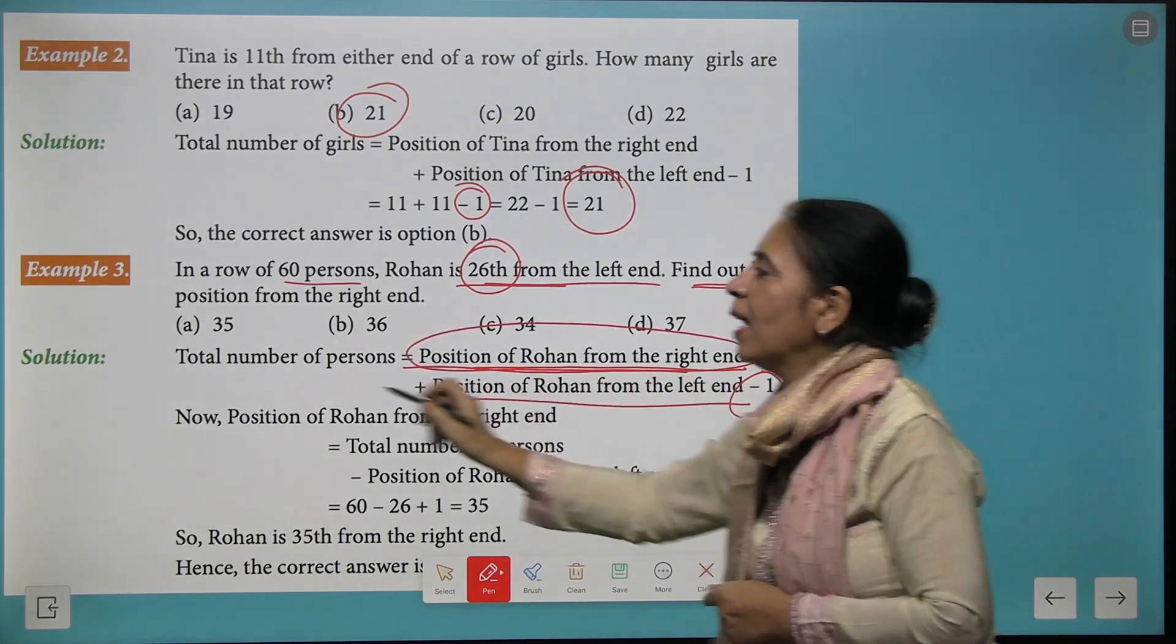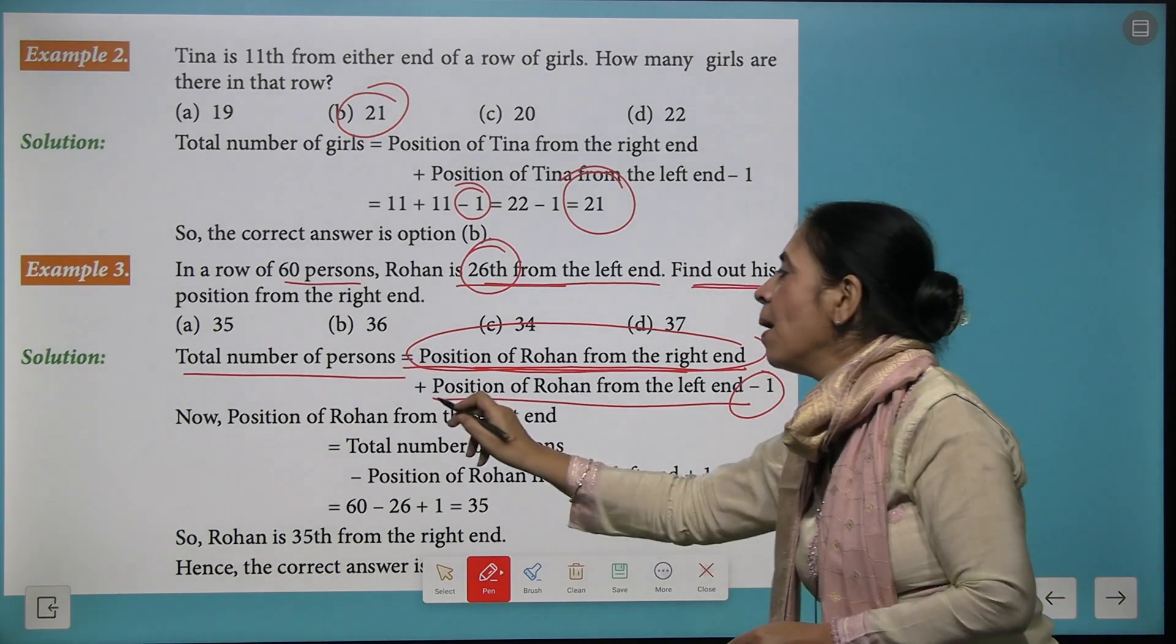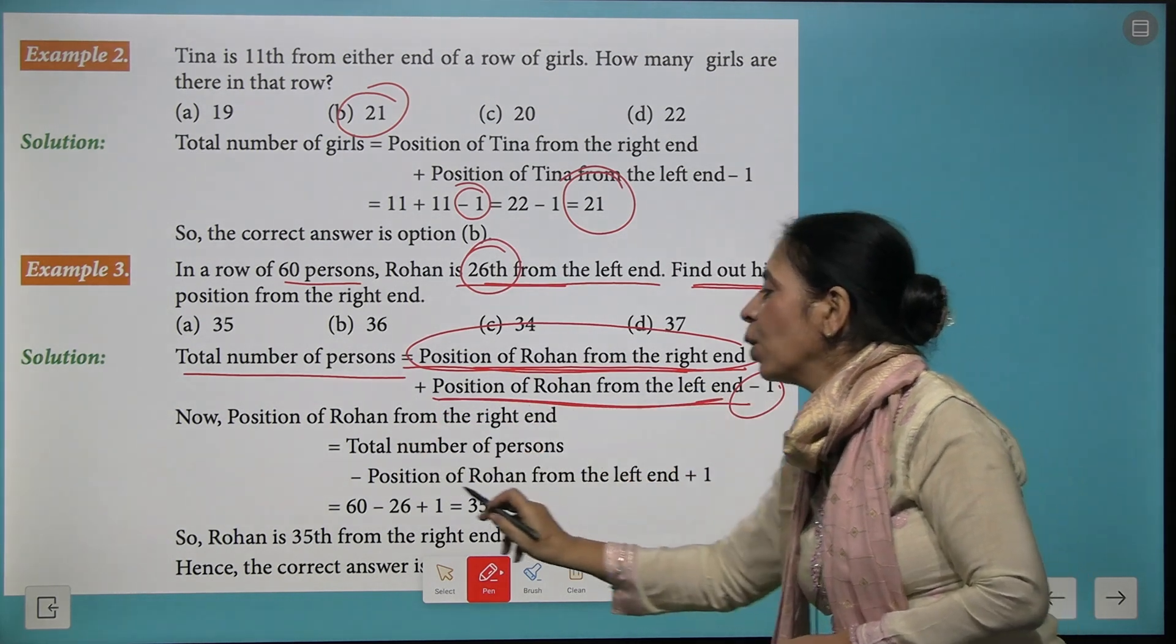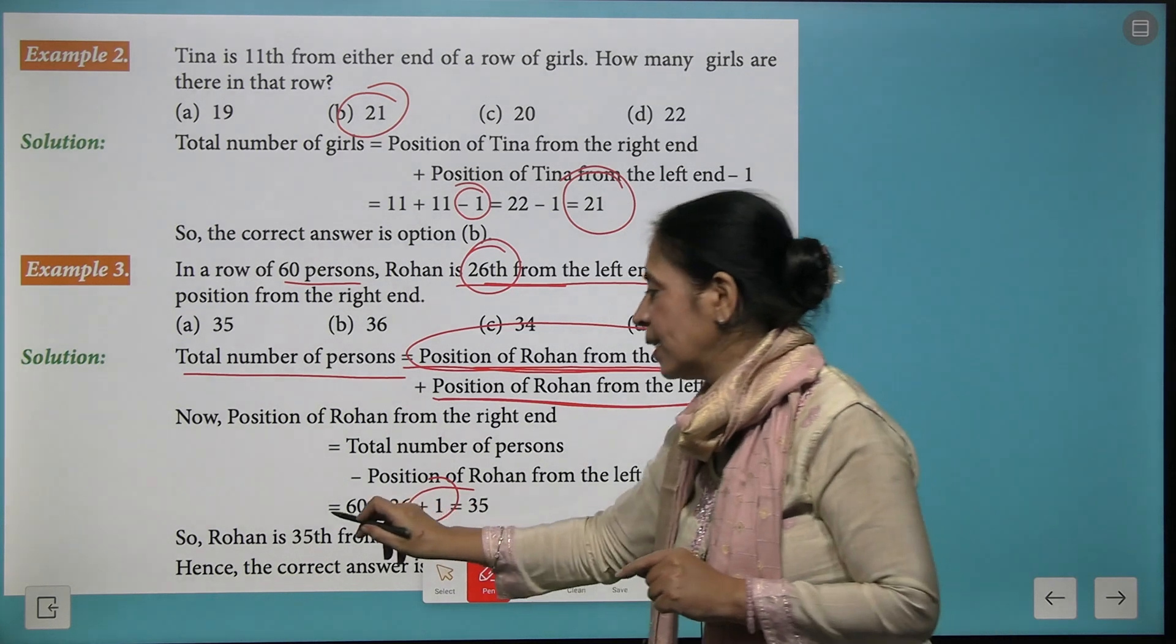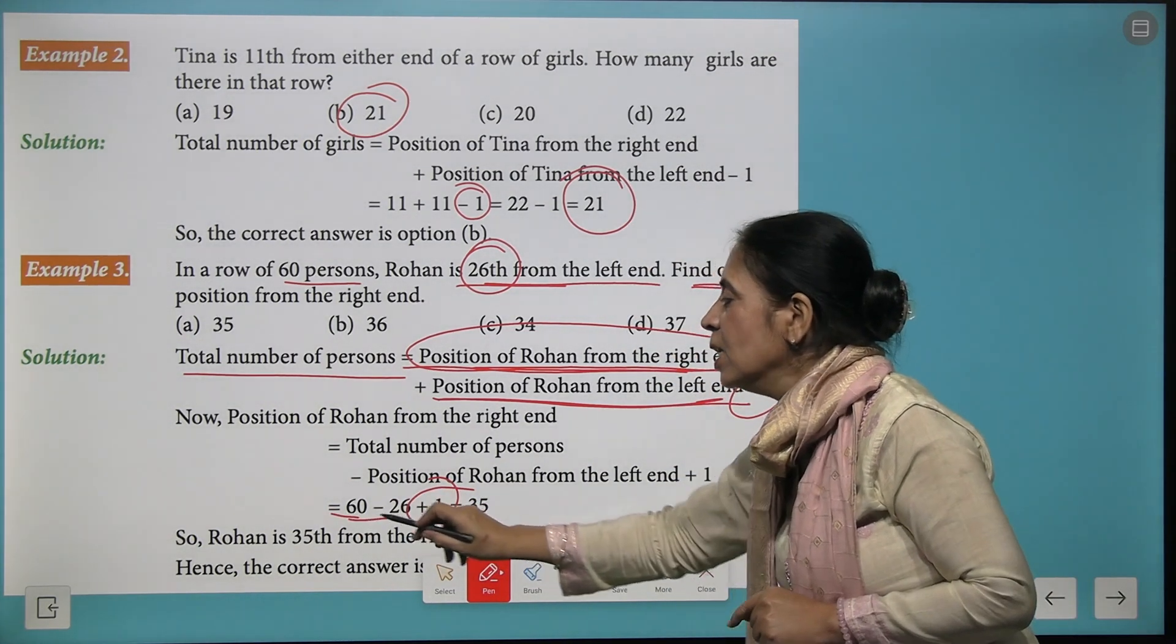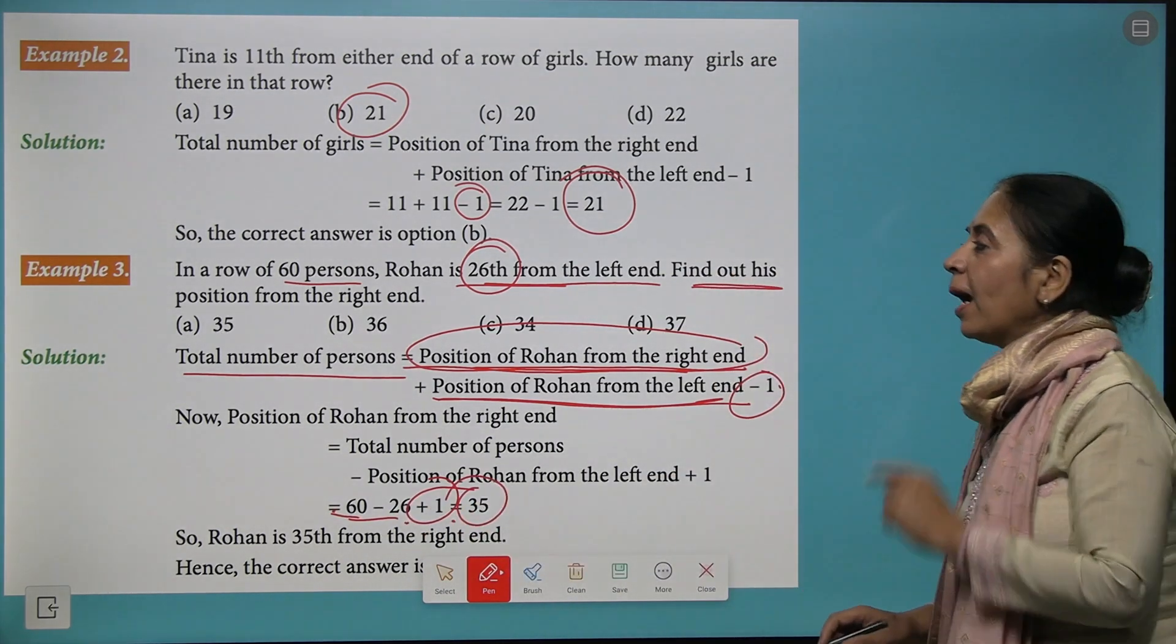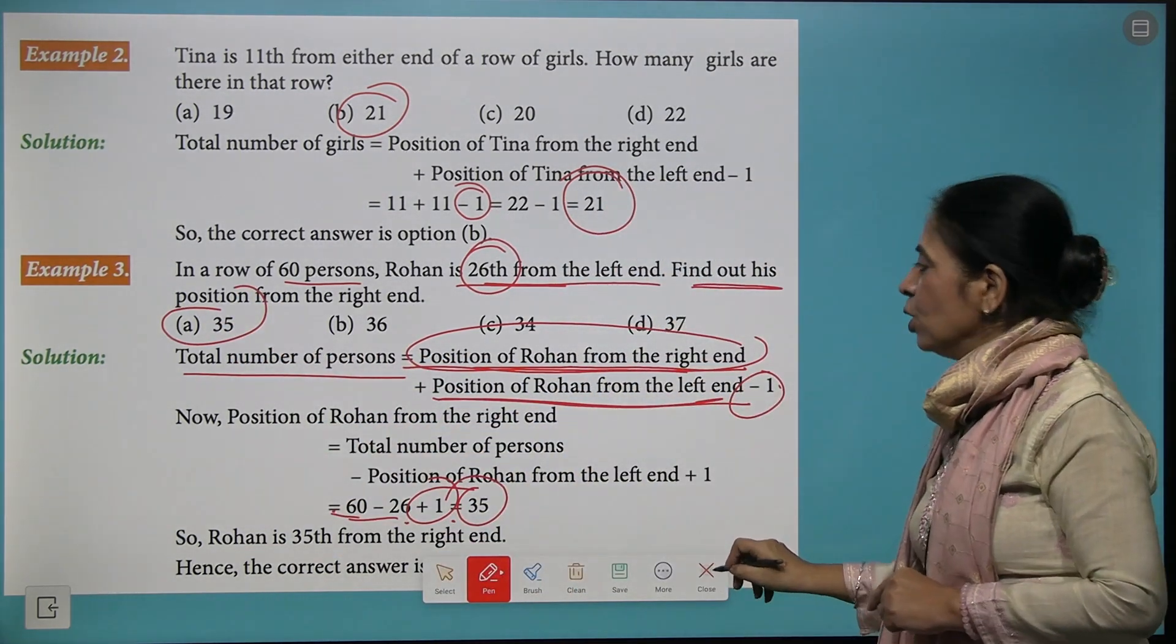To get the position of Rohan from the right hand, we will subtract from the total number of persons minus the position of Rohan from the left, and add 1 to it. Total number is 60, position from left is 26, so 60 minus 26 plus 1 gives us 35. The position from the right end will be 35.